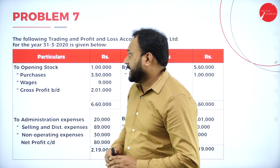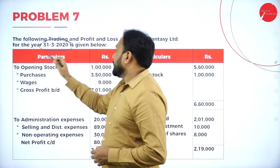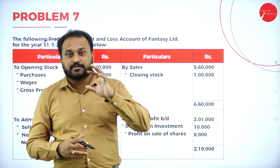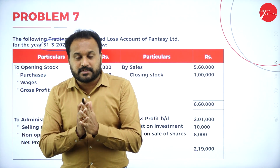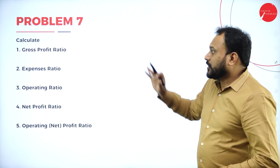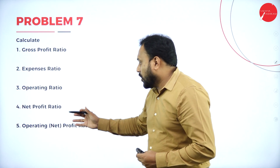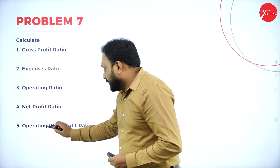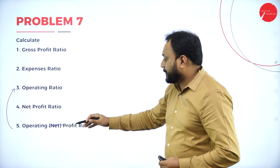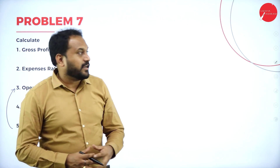Let's go with Problem 7. We have a trading and profit and loss account of Fantasy Limited for the year ending 31/3/2020. We are not supposed to think about the problem randomly; we go with the flow. The questions ask us to calculate: gross profit ratio, expenses ratio, operating ratio, net profit ratio, and operating net profit ratio.